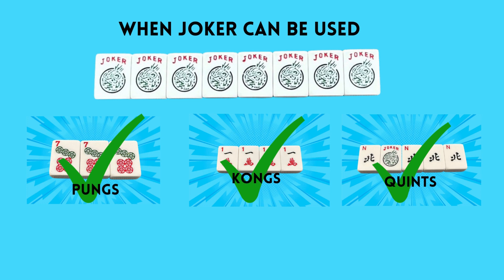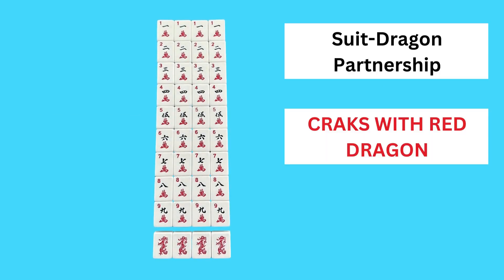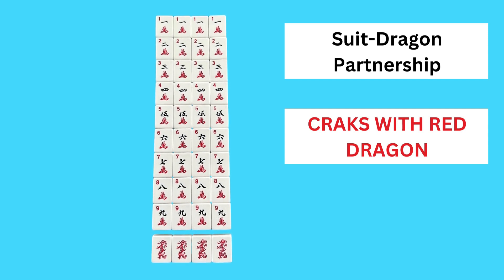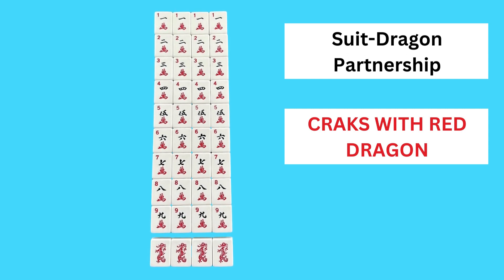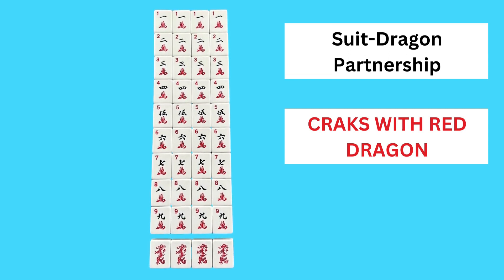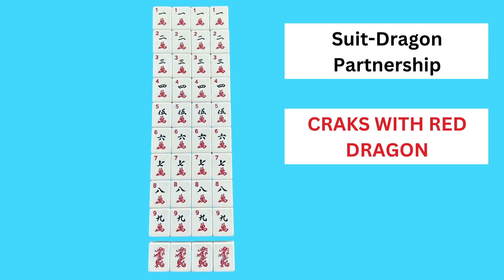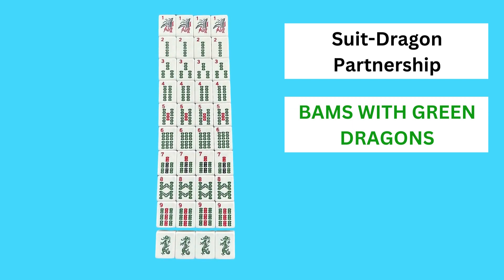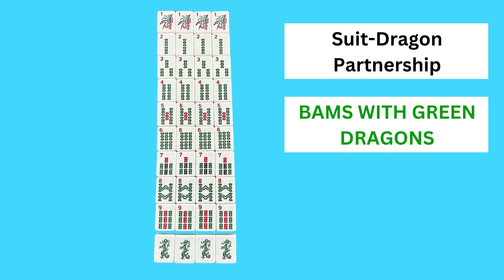Now we move on to our Suit Dragon Partnerships. The first partnership is the Red Dragon and the Cracks. Because these match in color, it's very easy to remember this partnership. The next partnership is the Green Dragon and the BAMs, which are also green in color, so it's very easy to identify this partnership as well.